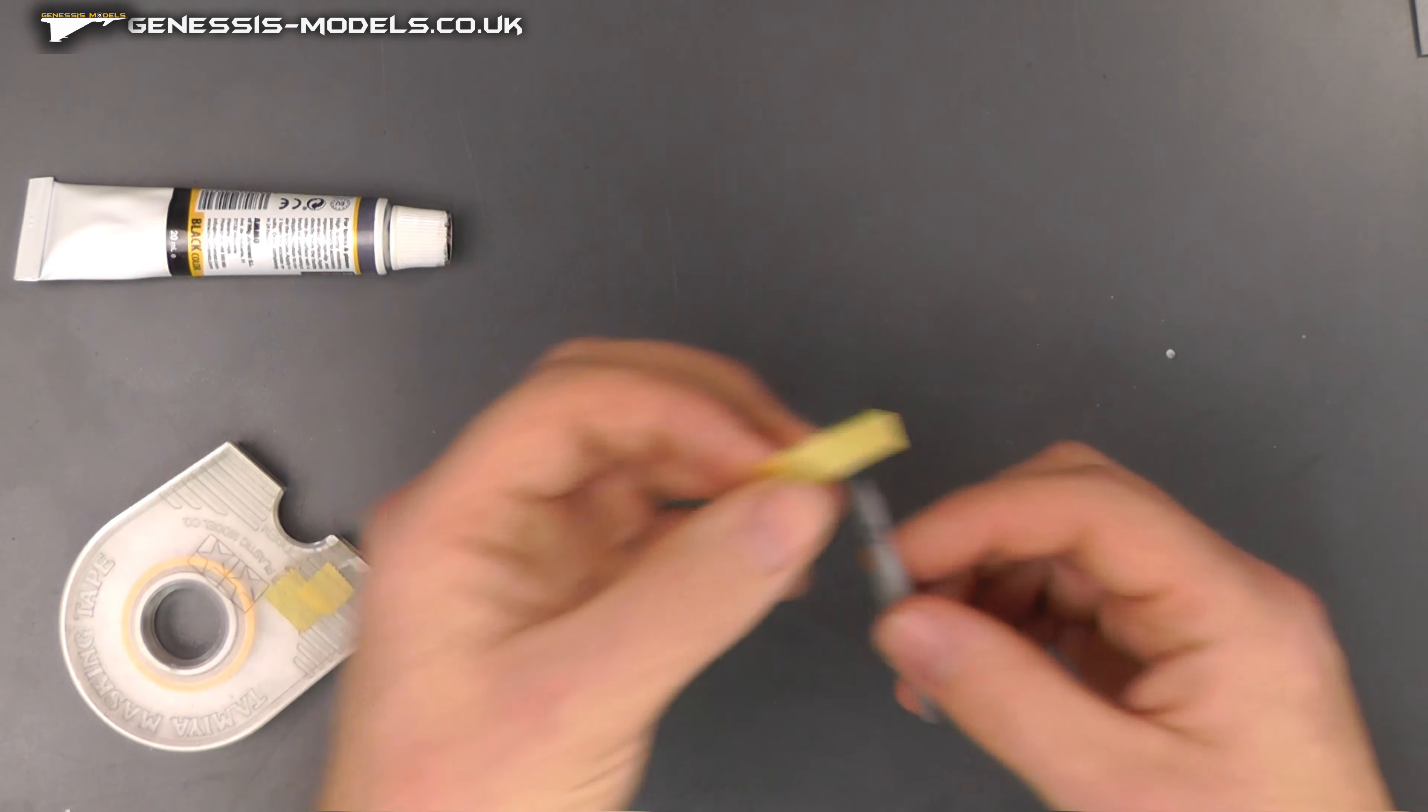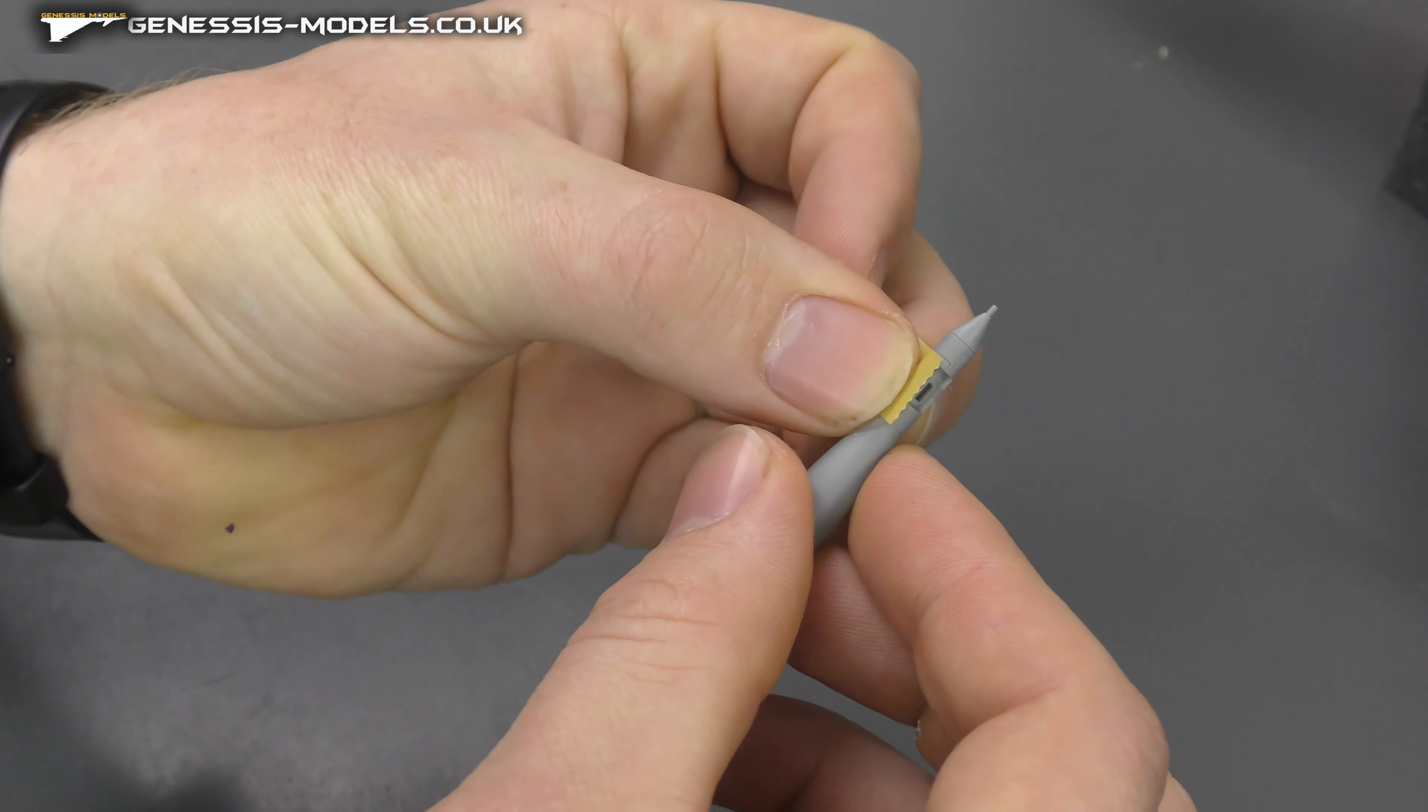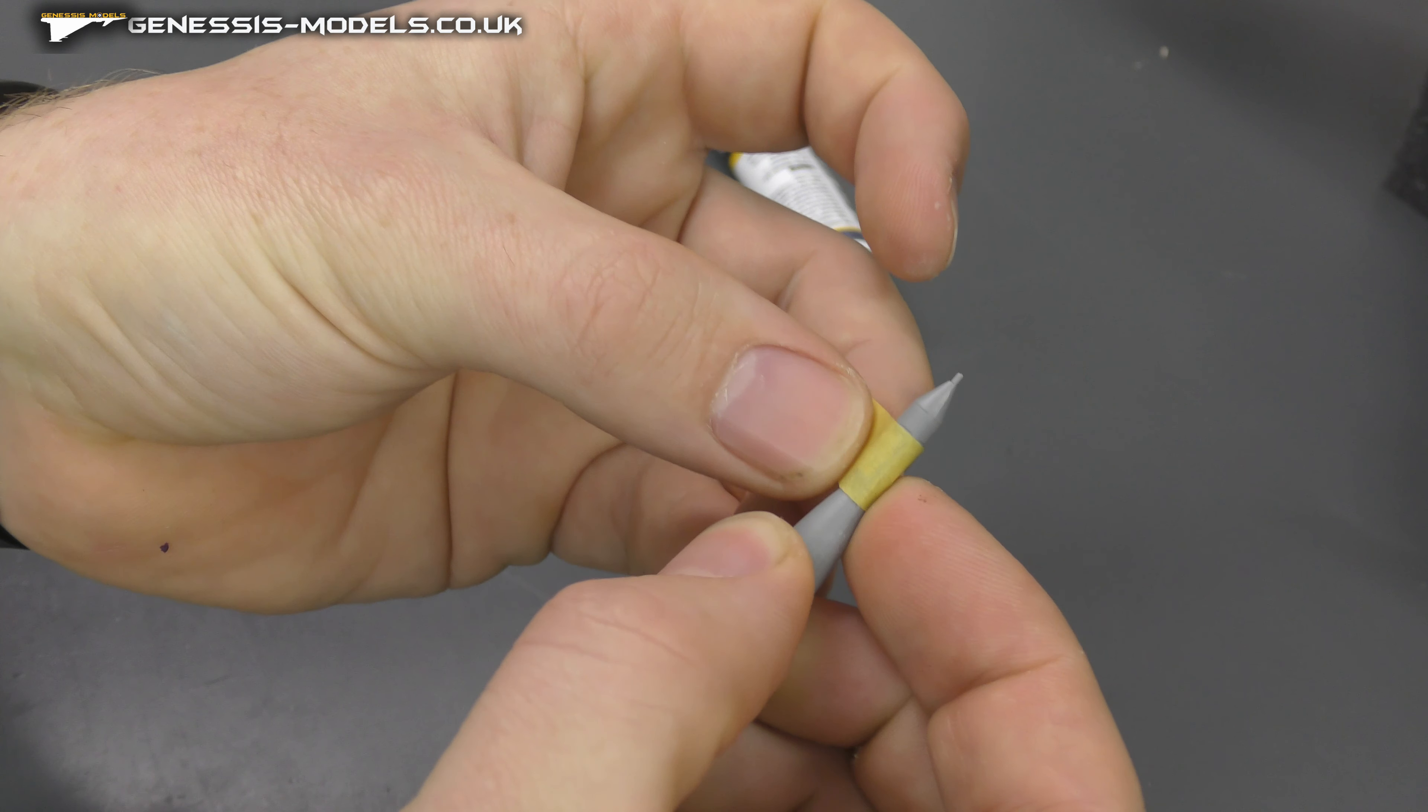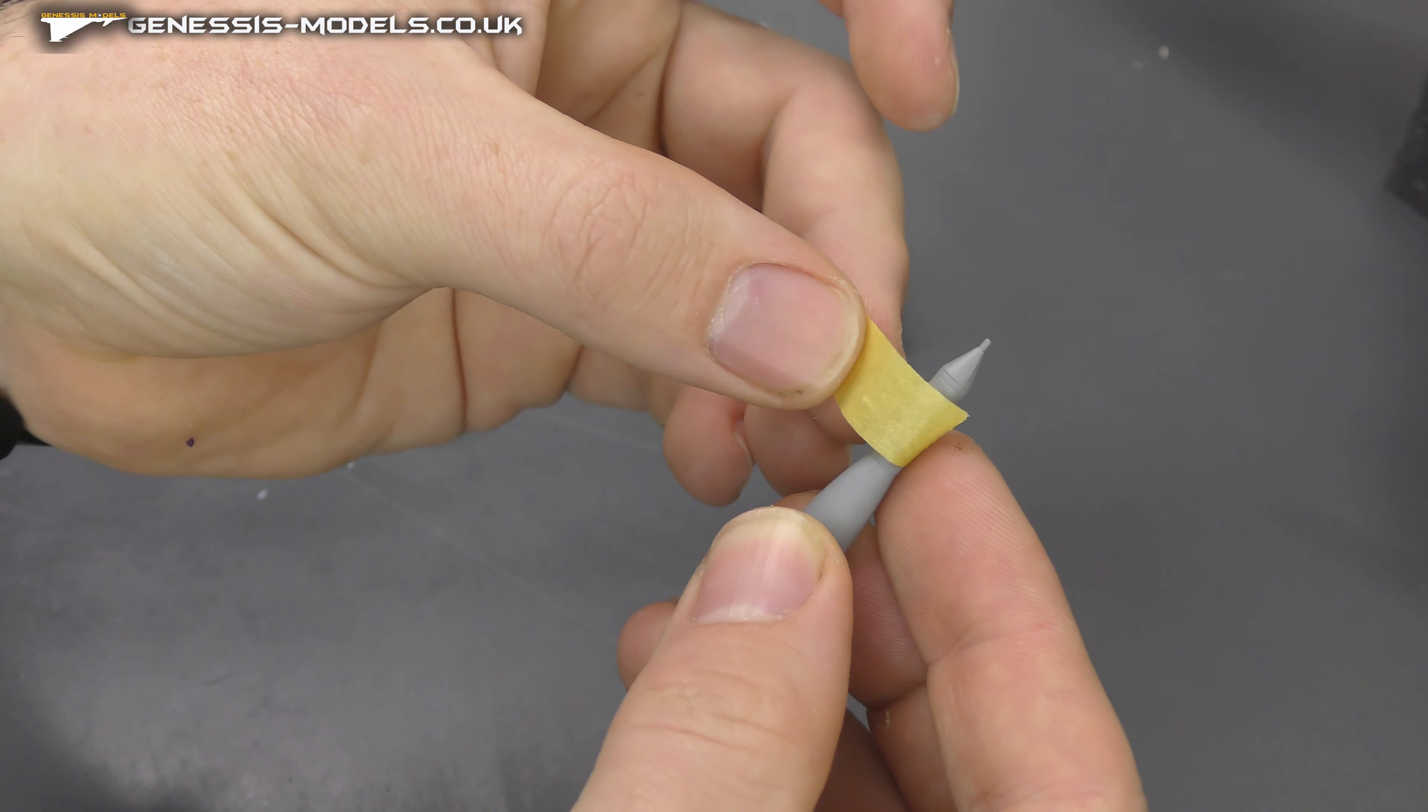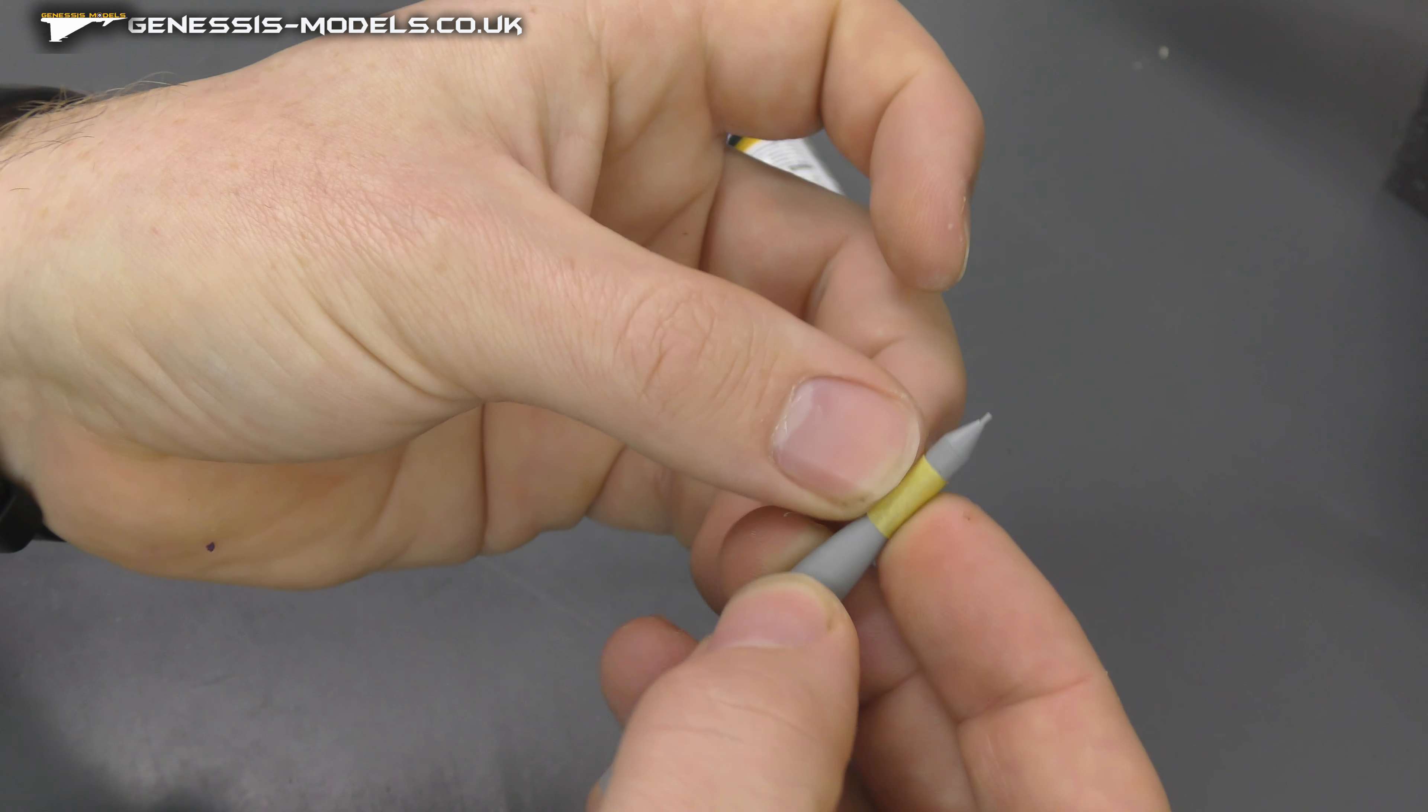So good old Tamiya masking tape, and we're just going to mask up where we don't want this paste to go. And it also gives us nice, sharp edges as well to make it look more cool.